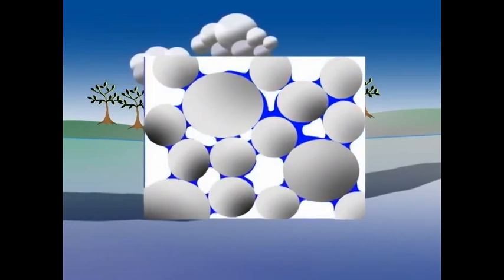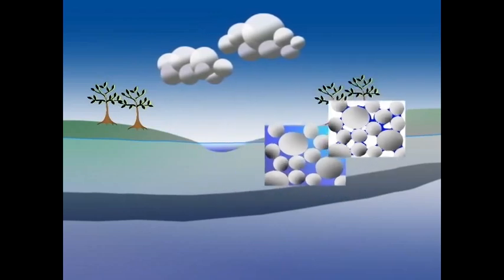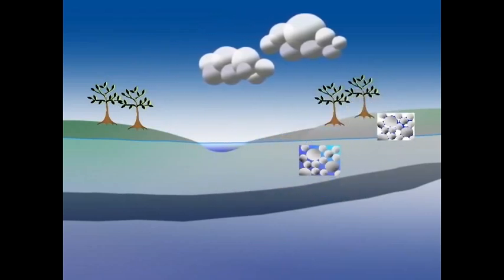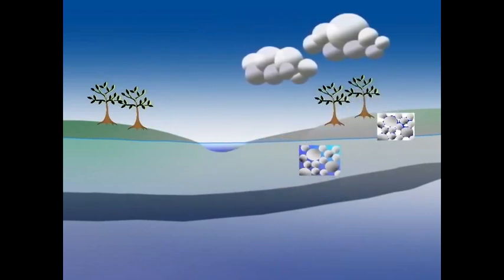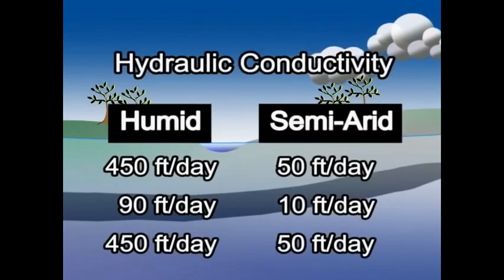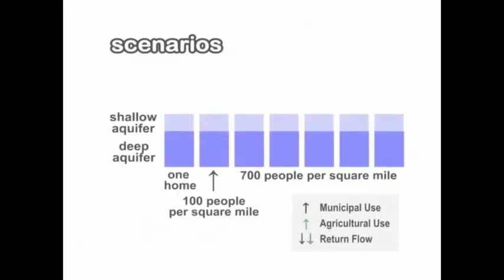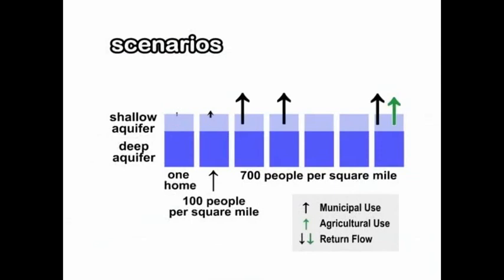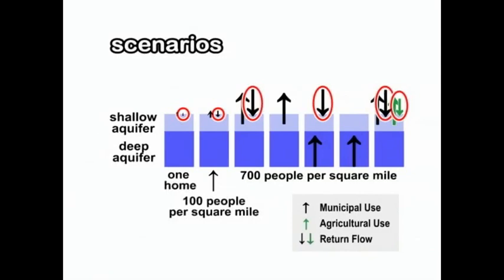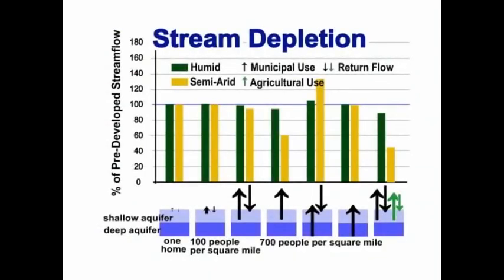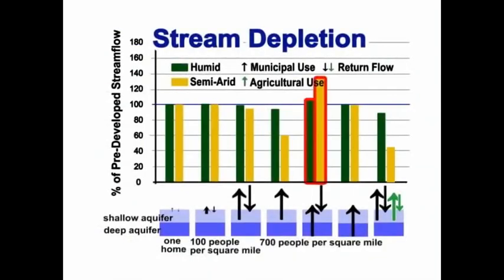However, materials in the semi-arid basin do not transmit water as readily. To simulate the same water levels in both basins, hydrologists will think of this in terms of hydraulic conductivities ranging from 10 to 450 feet per day. We evaluated many scenarios, with pumping small and large amounts from shallow and deep zones, and in some cases returning a portion of the water to the aquifer. Depending on the situation, streamflow increased or decreased.